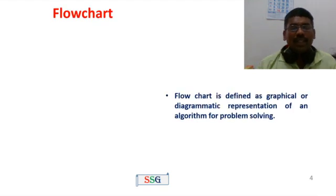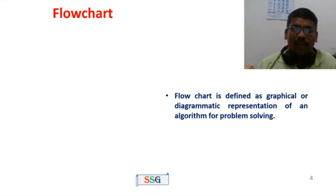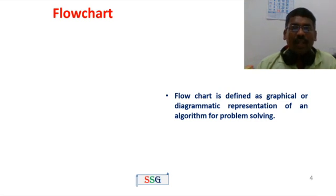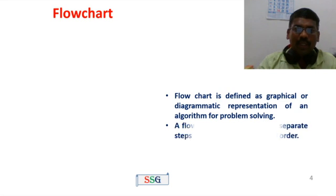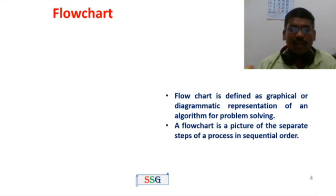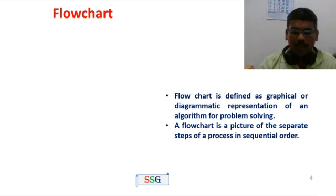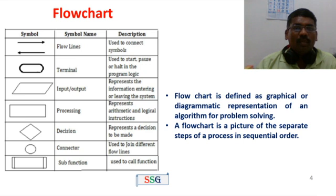Flowchart. Flowchart is nothing but a graphical representation. Algorithms are a well-defined sequence of steps written in simple English language. Flowchart is defined as a graphical or diagrammatic representation of an algorithm for problem solving. Flowchart is a picture of the separate steps of a process in sequential order.